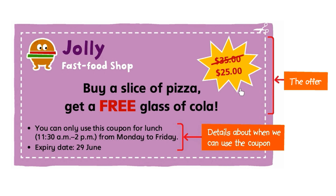On the right, there is an explosion bubble. Look at this shape — the shape and the color can also draw our attention. We want to look at it. The words in it usually tell important information, such as prices. How much are a slice of pizza and a glass of cola if we use this coupon?